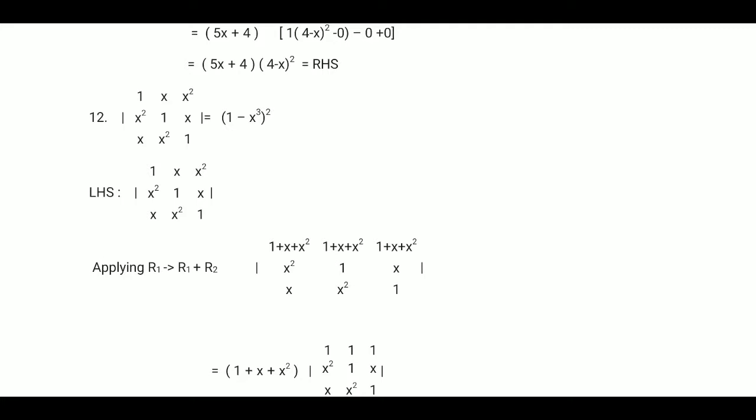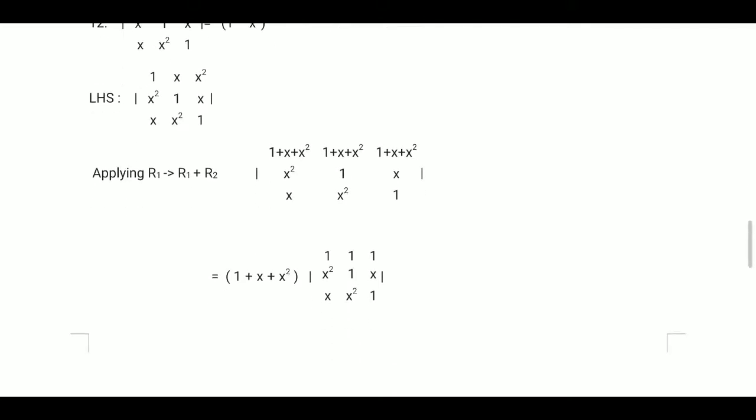Now there is question number 12. The determinant has elements: row 1 is [1, x, x²], row 2 is [x², 1, x], row 3 is [x, x², 1]. You have to prove this equals (1 minus x³)². Apply R1 becomes R1 plus R2 plus R3. We get all elements of R1 equal to (1 + x + x²), and R2 and R3 remain the same.